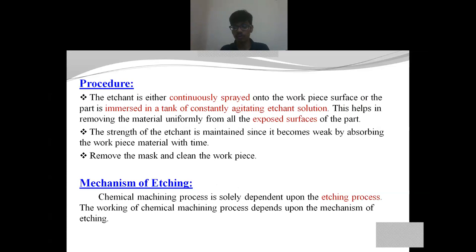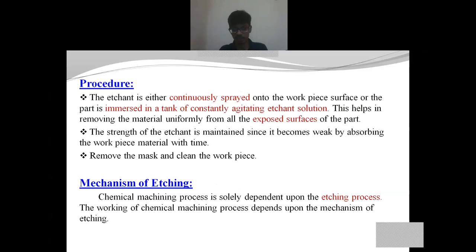The second technique is by using a large vat or container filled with the masking material. We dip the workpiece into the vat so that when it is taken out it is completely coated with the masking material. This is generally used for larger products and in commercial applications. After application of the mask, we peel off at the required locations and take it forward for the chemical reaction with the etchant.